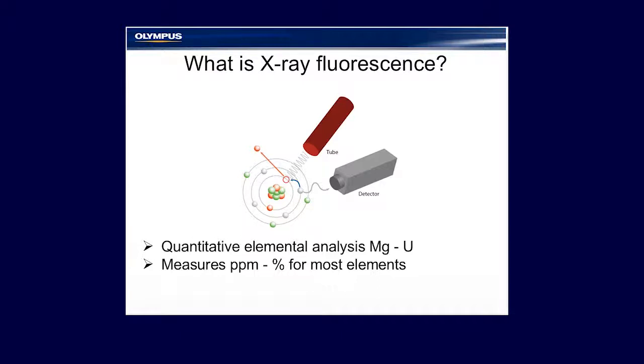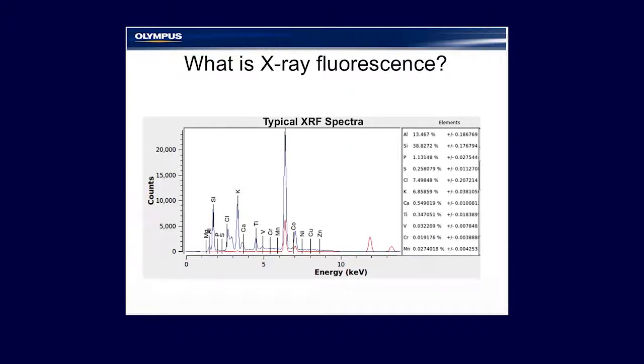XRF provides quantitative element analysis, typically magnesium through uranium. It can measure from the PPM level to percent level for most elements. On this next slide, we're showing the user interface — how the operator first sees the data output from the instrument. It consists of a graphic output, and to the right-hand side of the slide, it also gives you elemental breakdown, concentration, and statistical analysis. That's the output for X-ray fluorescence.